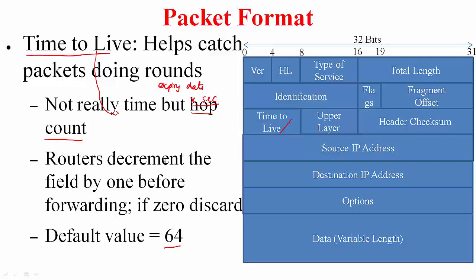The routers whenever they receive this packet they are going to decrement the field by 1 before forwarding and if a router receives a particular datagram with this field equal to 0, that means that time has expired or in this case the hop count is expired, just discard it.